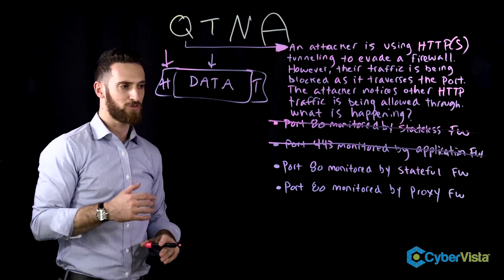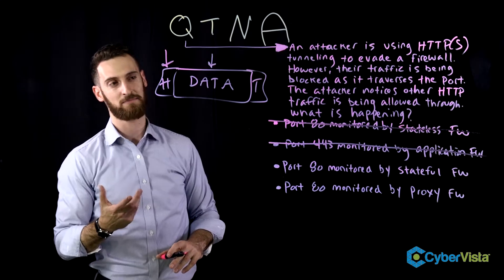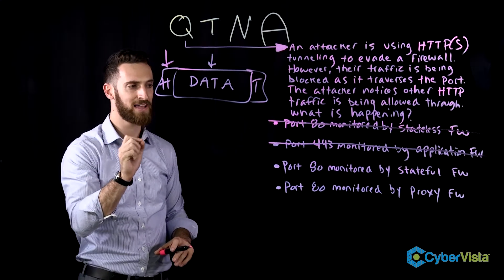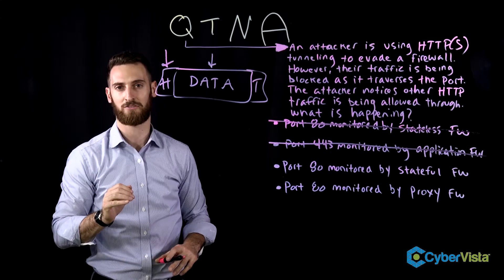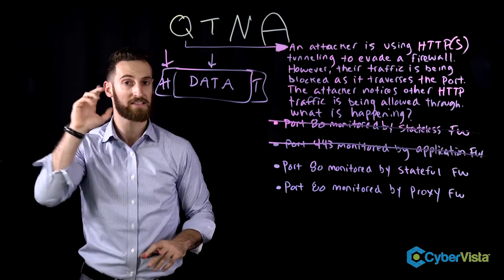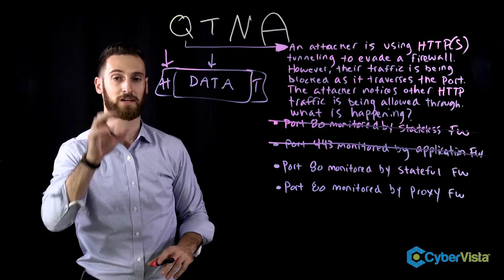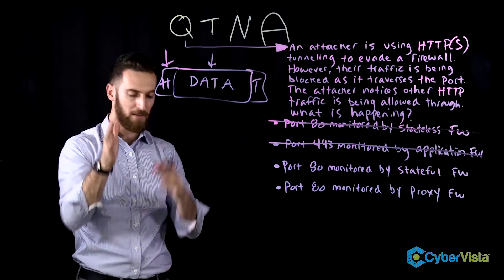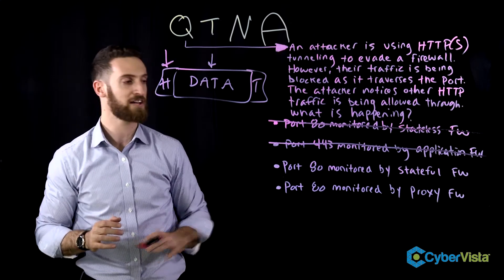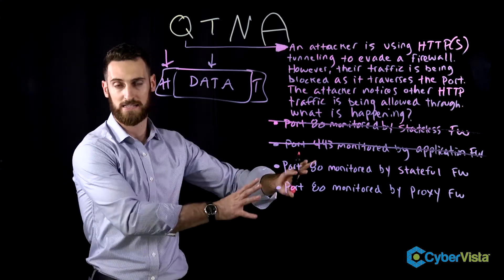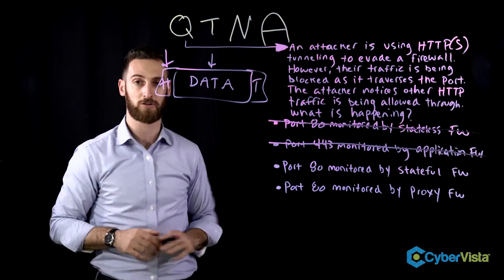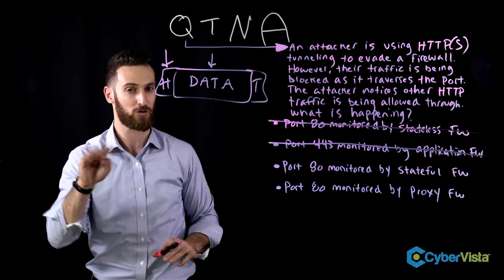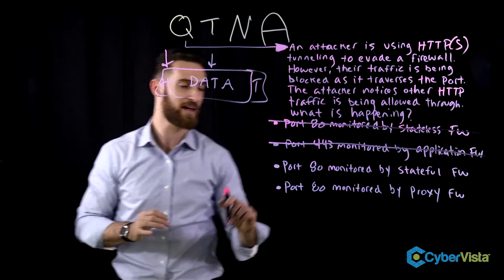The third option, stateful, is interesting — it's certainly more intelligent, but not intelligent enough. What is it making decisions based on? The state of the communication or connection in the TCP three-way handshake. If you're not part of an established TCP three-way handshake, the stateful firewall sees it as suspicious and drops it. So TCP — what layer is that? That's layer four. We got a little higher, but we're not there yet.